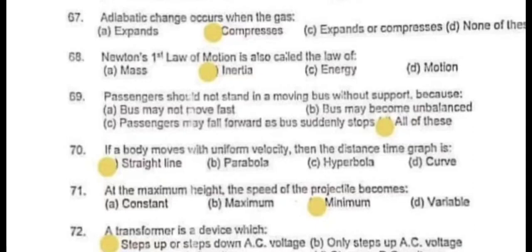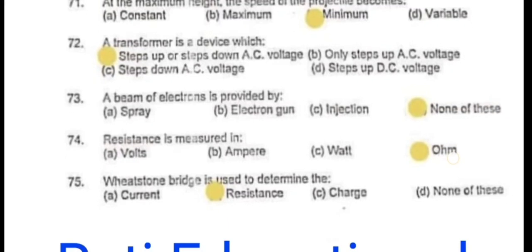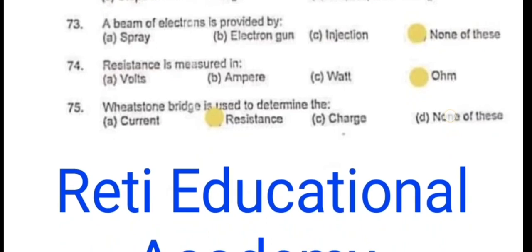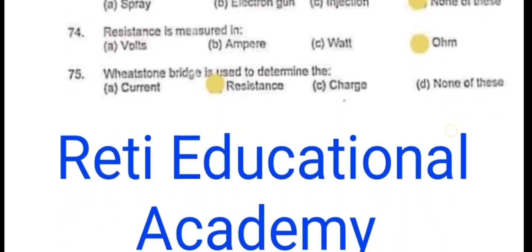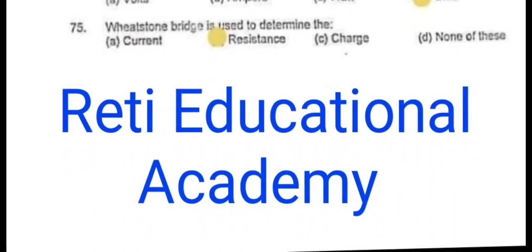Question 70: If a body moves with uniform velocity, then the distance-time graph is a straight line. Question 71: At the maximum height, the speed of the projectile becomes minimum. Question 72: A transformer is a device which steps up or steps down AC voltage. Question 73: A beam of electrons is provided by none of these. Question 74: Resistance is measured in ohm. Question 75: Wheatstone bridge is used to determine resistance.